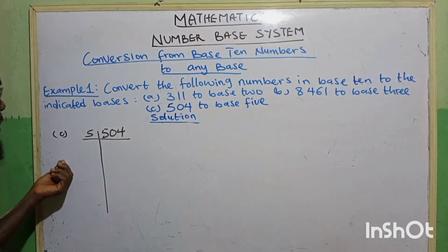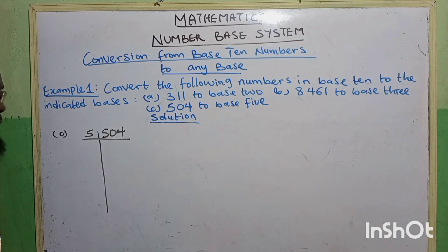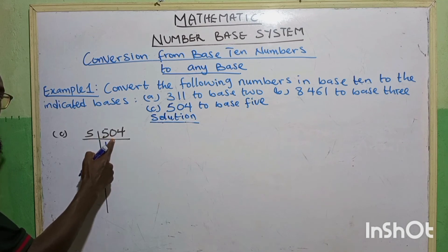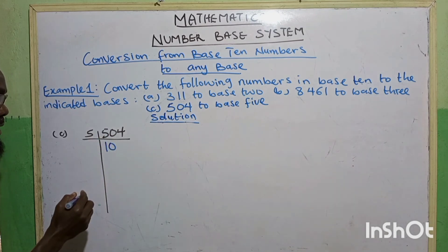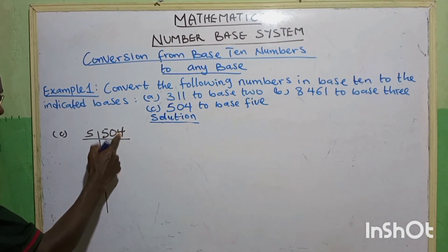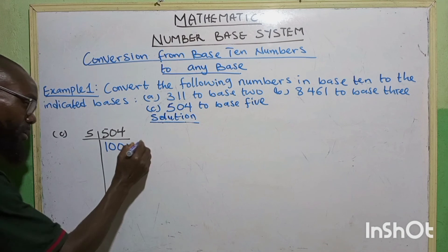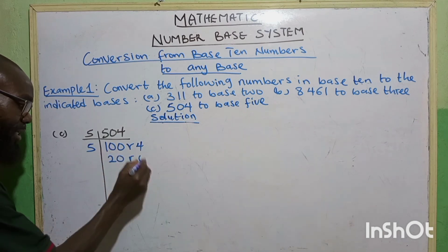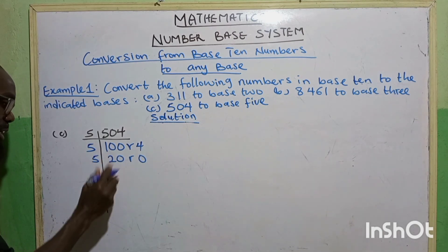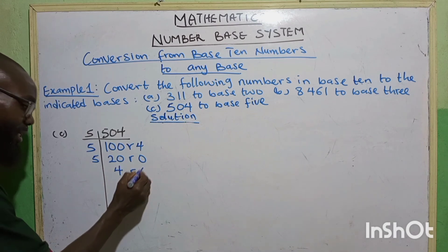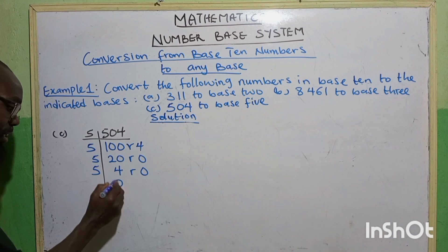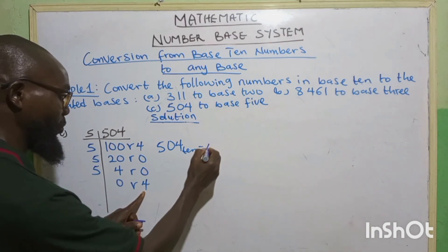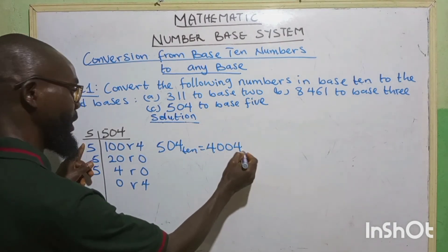Question C: We want to convert 504 base 10 to base 5. 5 goes into 5, we have 1. 5 goes into 0 — not possible, 0. 5 goes into 4 — not possible, 0, remainder 4. Then 5 goes into 10, we have 2. 5 goes into 0, we have 0 — remainder 0. 5 goes into 20, we have 4 — remainder 0. Then 5 goes into 4, we have 0 — remainder 4. So 504 base 10 is equal to 4004 in base 5.